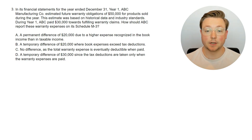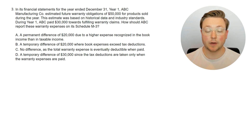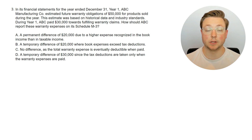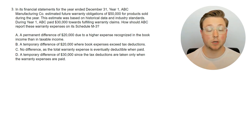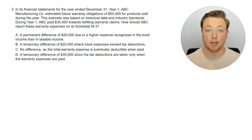Here's question three. In its financial statements for the year ended December 31, year one, ABC Manufacturing Company estimated future warranty obligations of $50,000 for products sold during the year. This estimate was based on historical data and industry standards. During year one, ABC paid $30,000 towards fulfilling warranty claims. How should ABC report these warranty expenses on its Schedule M3? Pause the video, do your own calculation, and come back when you're ready.